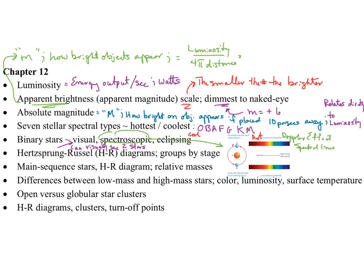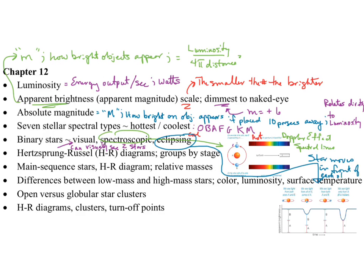Binary stars — most stars actually have a companion, and they orbit a common center of mass. Binary stars where you can literally see two stars are called visual binaries. If you can't really see two stars but you can study their spectra, the spectral lines will shift because of the Doppler effect — those are spectroscopic binaries. The third type is one where you can tell there are two stars as one scoots behind or in front of the other — that's called an eclipsing binary.